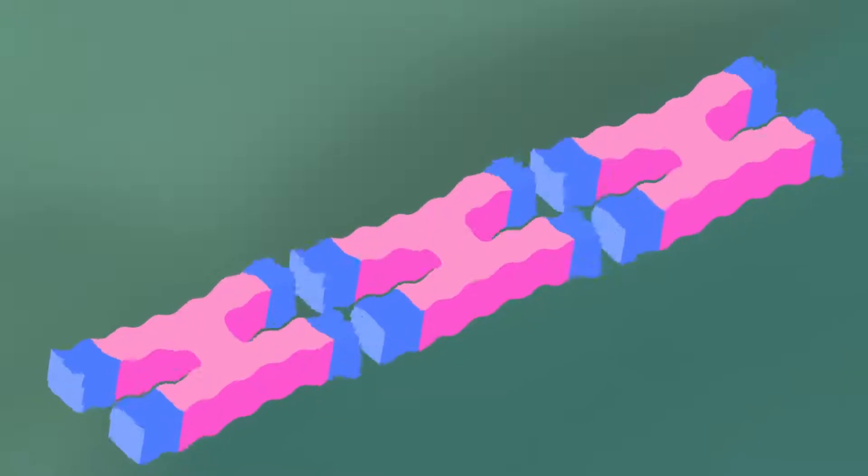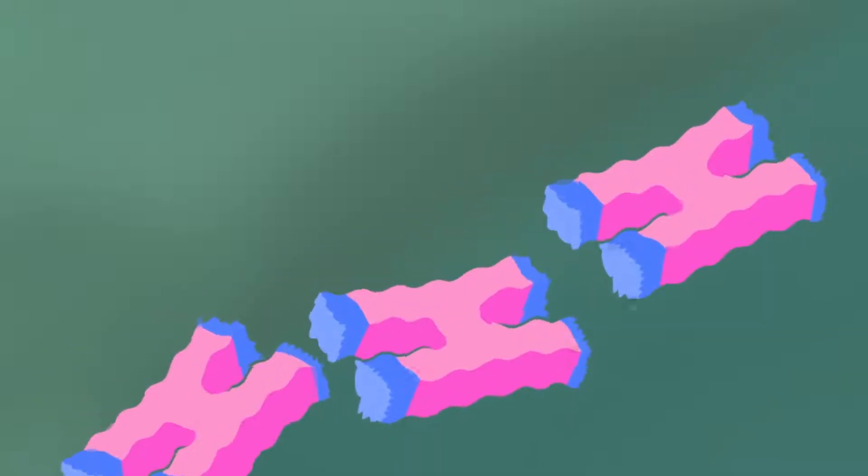When telomeres become too short, a cell can no longer divide, and it dies.